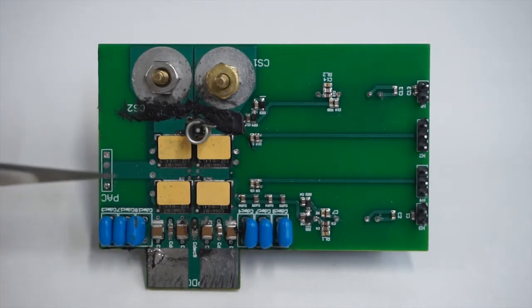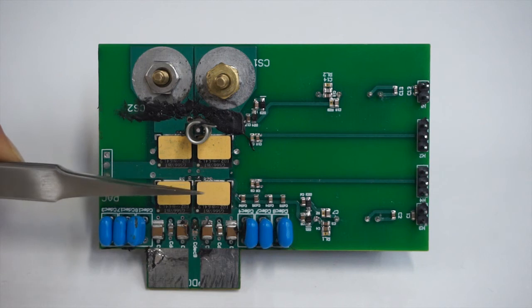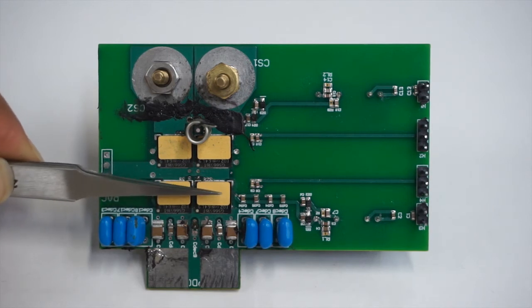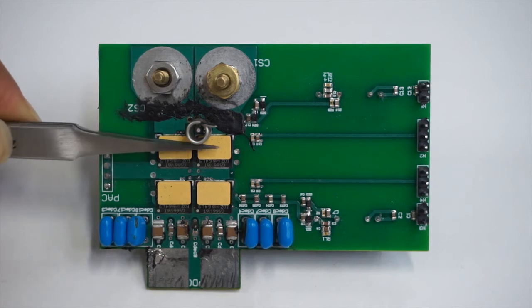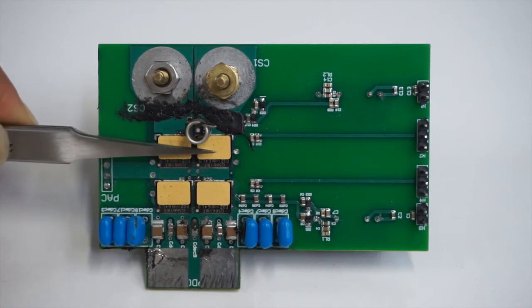This is the double pulse tester board that I was talking about in my presentation. Each phase leg has four devices. On the top of the board we have two GaN devices, these two parallel devices are the high-side devices, and then these are the two bottom devices on the board which are the low-side devices.